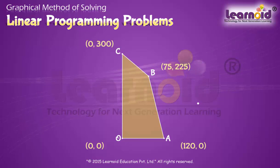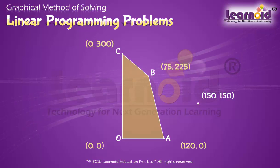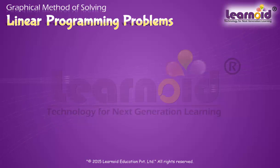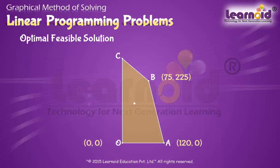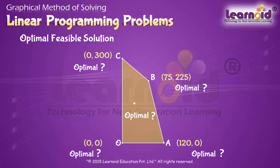Any point outside the feasible region is called an infeasible solution. For example, the point (150, 150) is an infeasible solution of the problem. Any point in the feasible region that gives the optimal value — that is, the maximum or minimum value of the objective function — is called an optimal solution. In the feasible region there are infinitely many points, and it would be very difficult to check every point for the optimal solution. To handle this situation, there are two fundamental theorems in linear programming which we will learn in the next lesson.